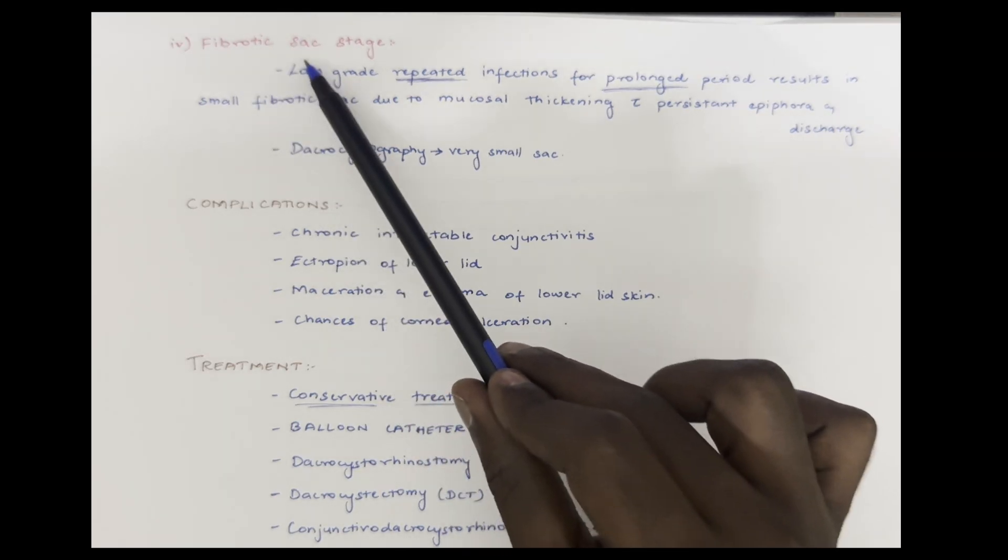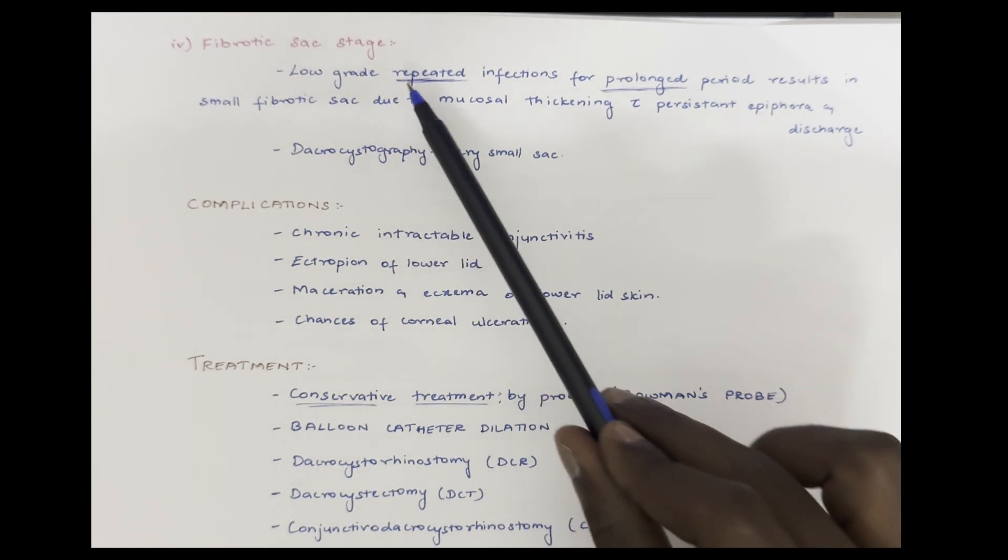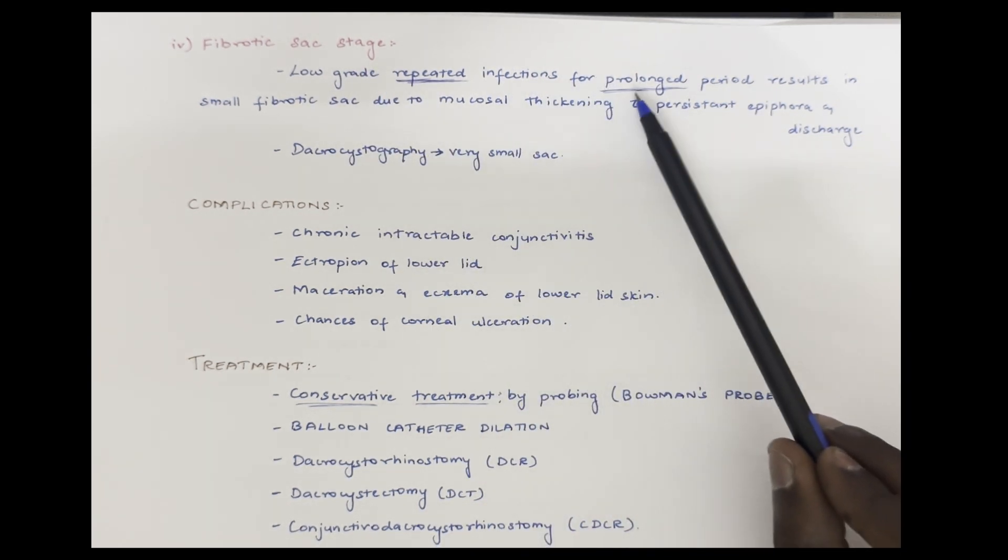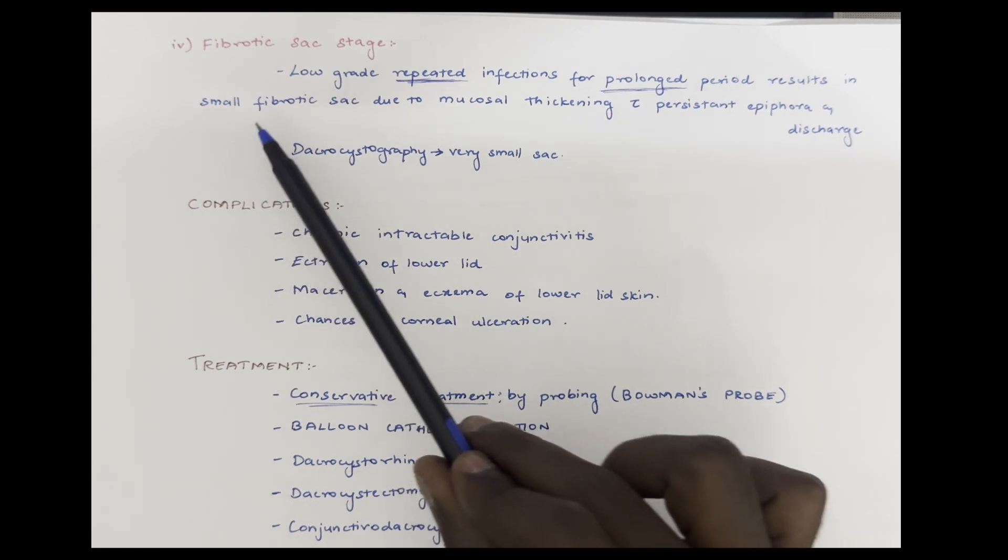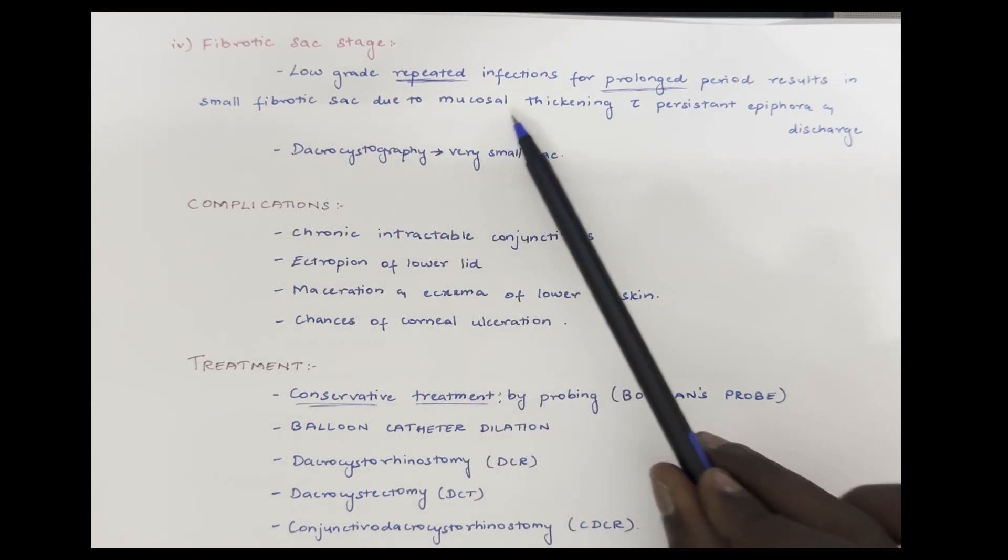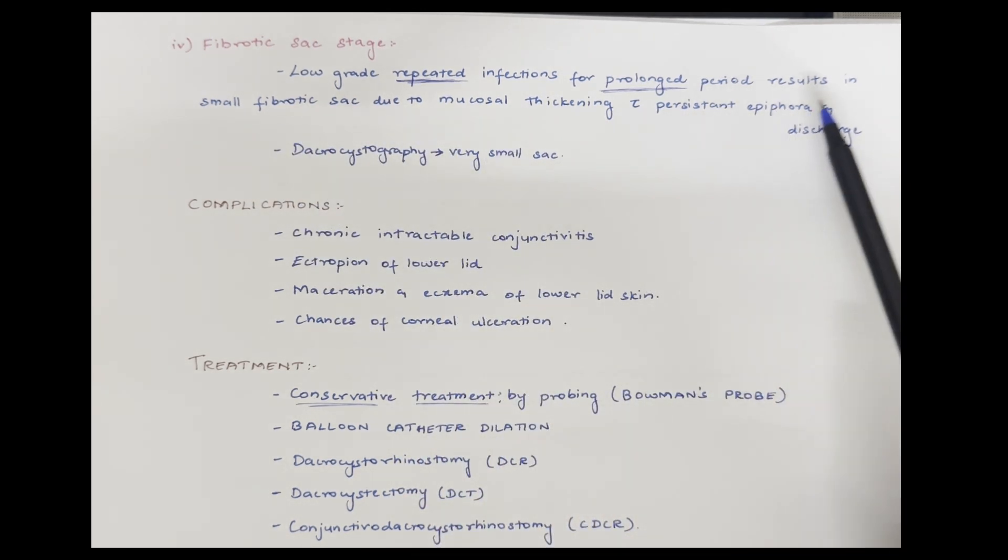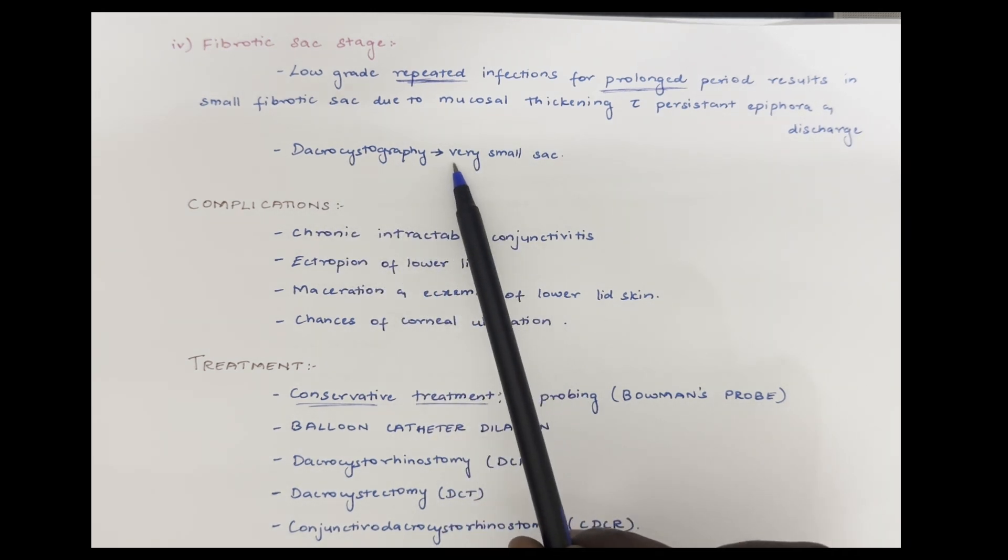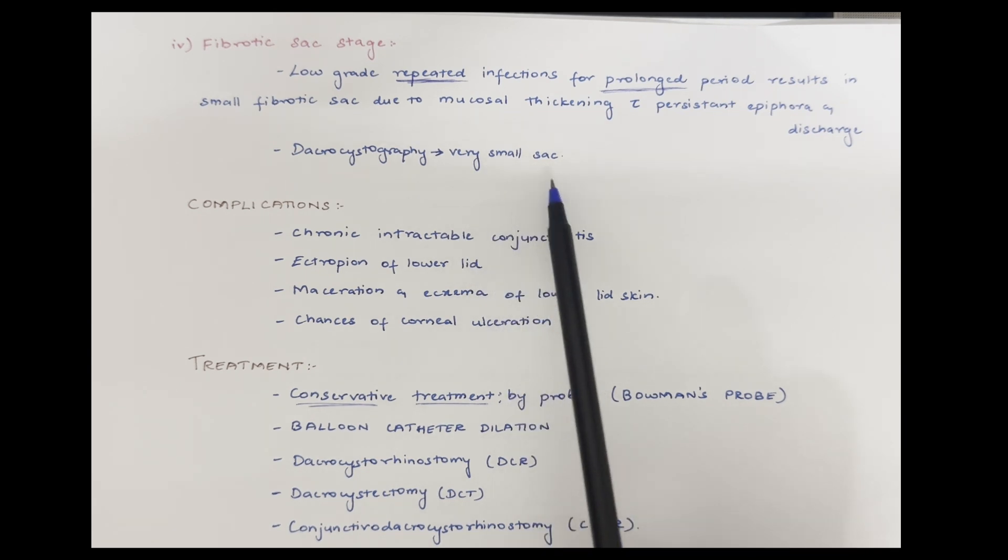Fourth stage is the fibrotic sac stage. Low-grade repeated infection for prolonged periods result in small fibrotic sac due to mucosal thickening and persistent epiphora and discharge. On dacryocystography, we can see that the sac has become very small.